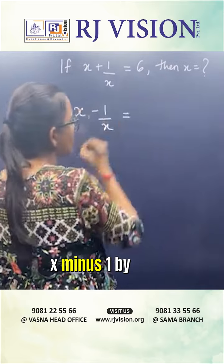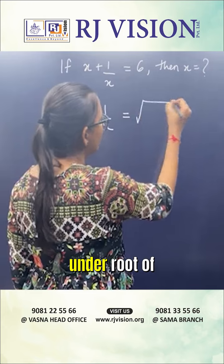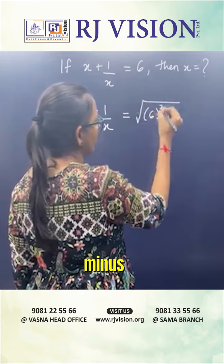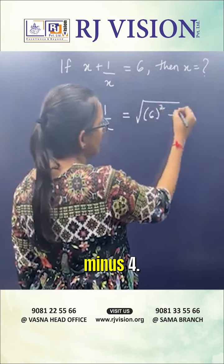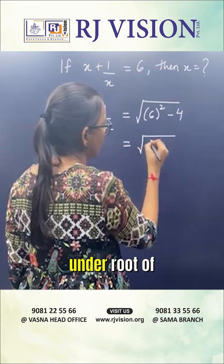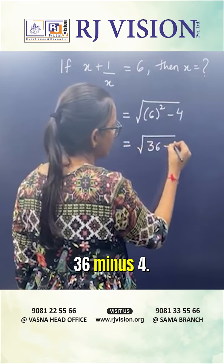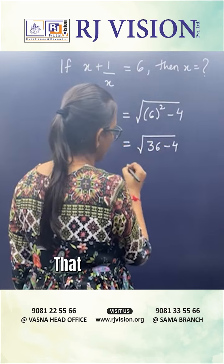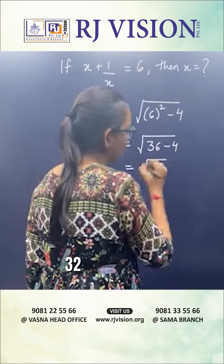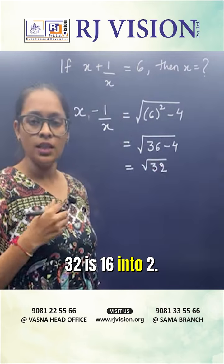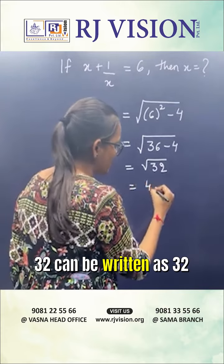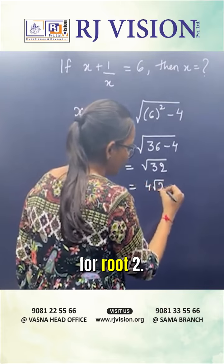x minus 1 by x will be under root of 6 squared minus 4, that is under root of 36 minus 4, that is under root 32. 32 is 16 into 2, so the square root of 32 can be written as 4 root 2.